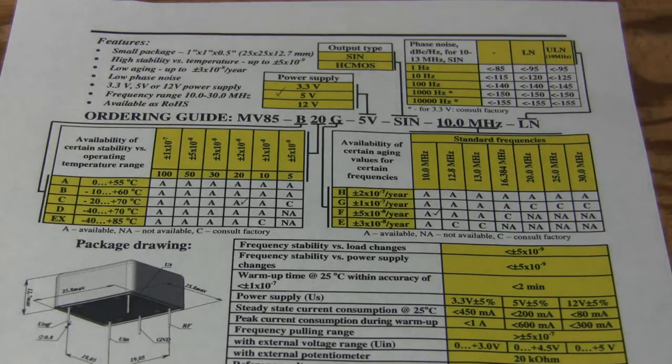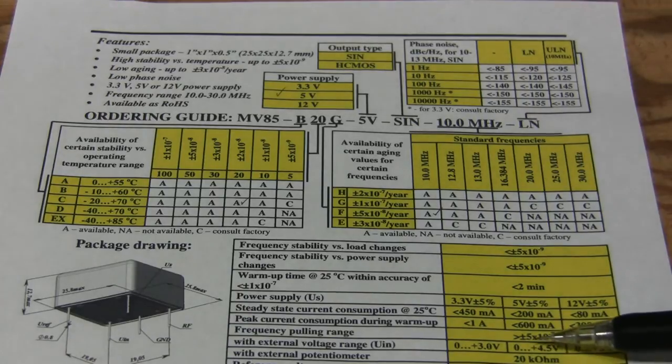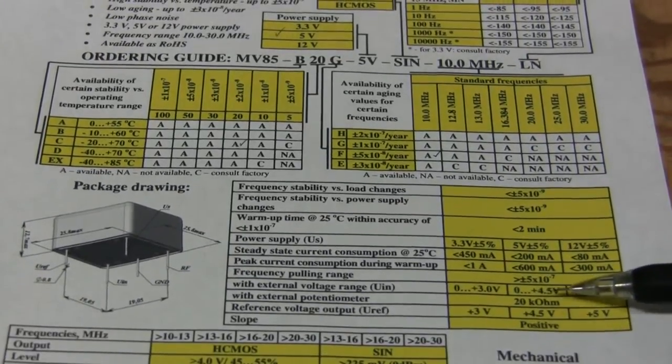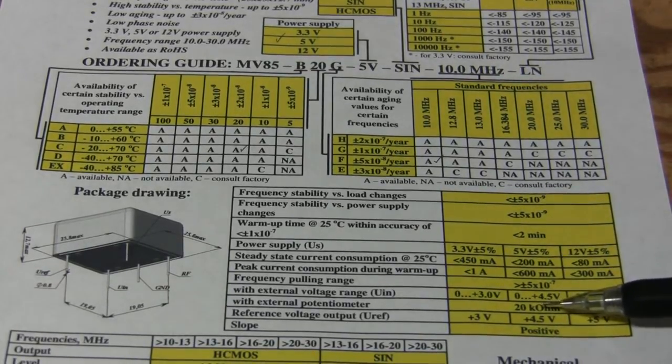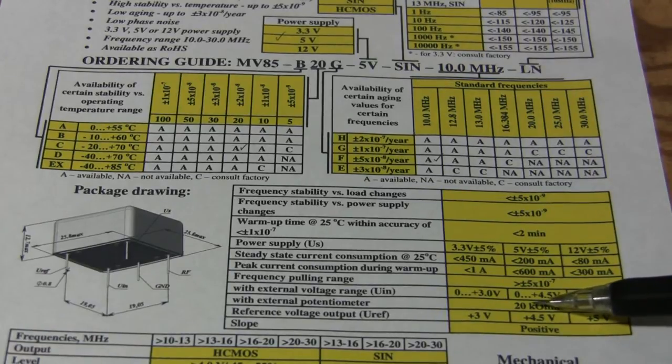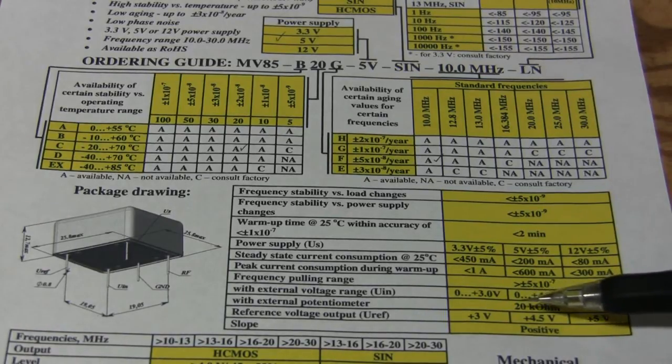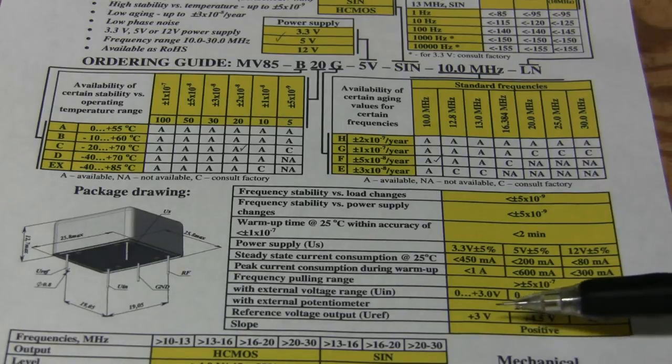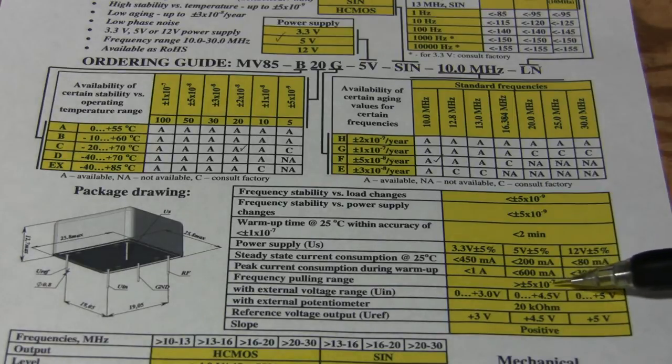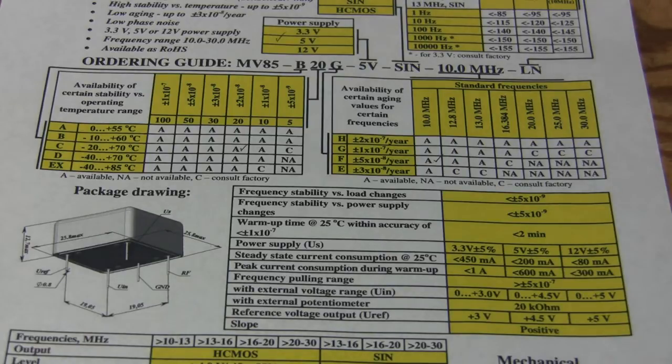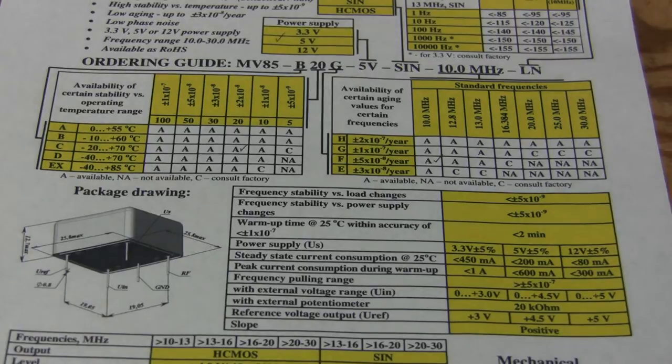And they have a pin to adjust frequency by external means. If we hook up 20 kilo ohm pot, and one side goes to ground, another side goes to reference pin, which is the output from the oscillator, and it's supposed to be pulled around 0.5 ppm both ways. Let's hook it up and give it a try.